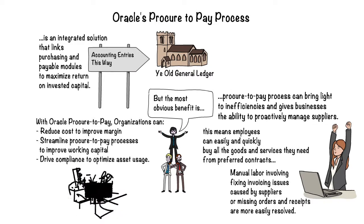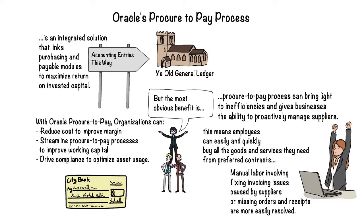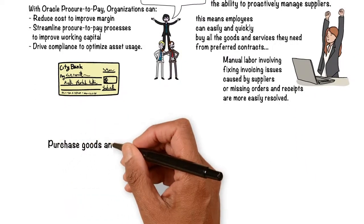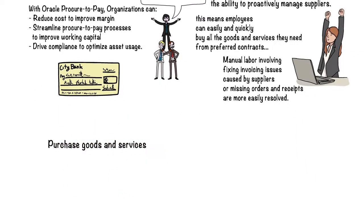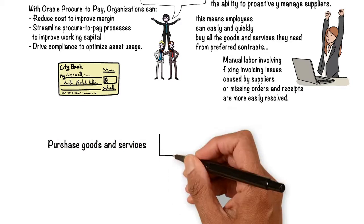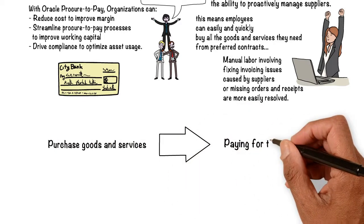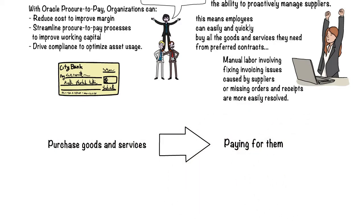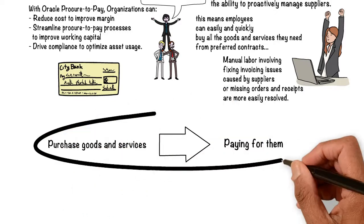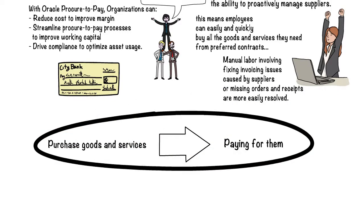When there is a purchase made from a vendor or a supplier, there should be a payment made associated to that purchase. To summarize, the entire process of purchasing goods and services and making payment for that purchase to the supplier or vendor is called a Procure2Pay process.